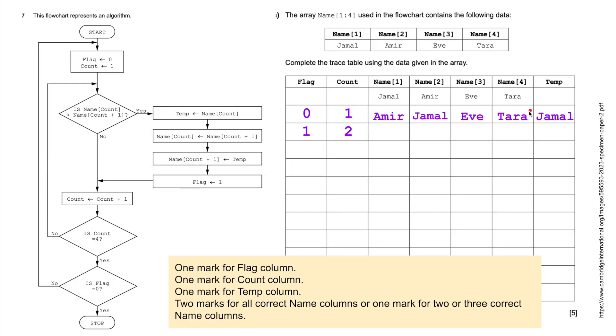Name count plus one, sorry, temp, which is Jamal, gets put into name count plus one. So Jamal goes into here. And then we carry on down. Flag has been assigned the value one. Eve and Tara stay the same because they've not been touched, so we leave those alone. And then count is greater than count plus one, so I'm going to put a two in there. Is count, does count equal four? Well, no, it doesn't. So we go back up here.